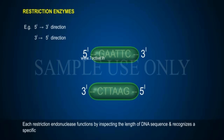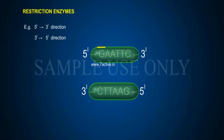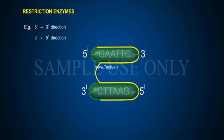Each restriction endonuclease functions by inspecting the length of a DNA sequence and recognizing a specific palindromic nucleotide sequence in DNA. A palindrome means a group of letters that form the same word when read both backward and forward. For example, in the 5' to 3' direction: 5'-G-A-A-T-T-C-3' and in the complementary strand 3'-C-T-T-A-A-G-5'.